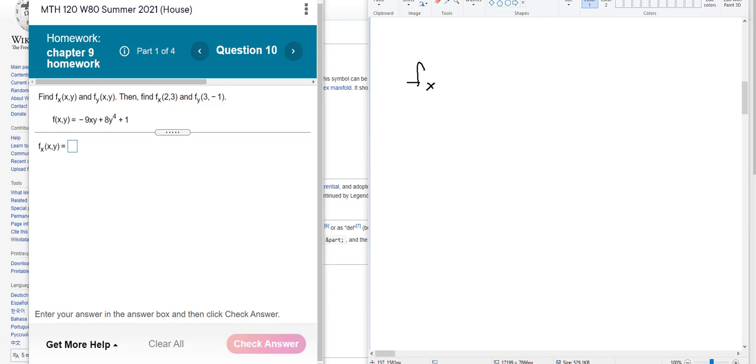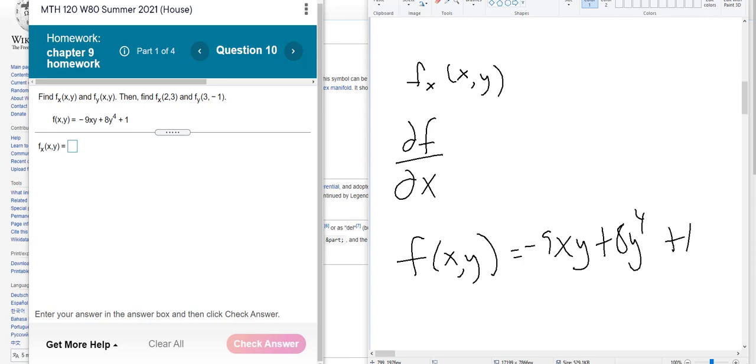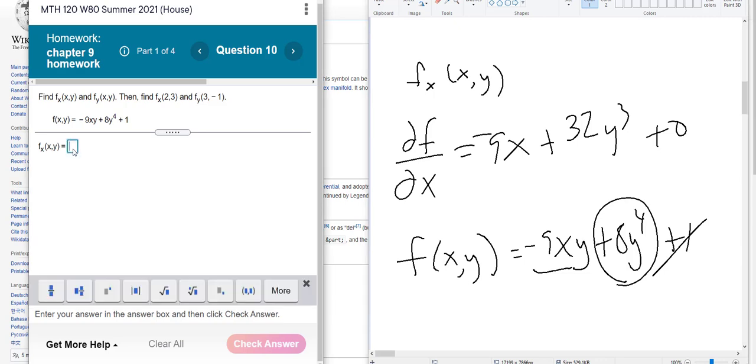So they want us to find f sub x, x, y. That means the derivative. That's the same as saying the derivative of f with respect to x treating y like a constant. So I'm going to write anything that has a y. I'll write it in the back. So let's see. f of x, y equals negative 9x, y plus 8y to the fourth plus one. So look, 9x is a constant. So that's the coefficient of that term, negative 9x. And then 8y to the fourth, that's treated like a variable. So that's 32y to the third. And that's a constant. So it's zero. So it's negative 9x plus 32y to the third.